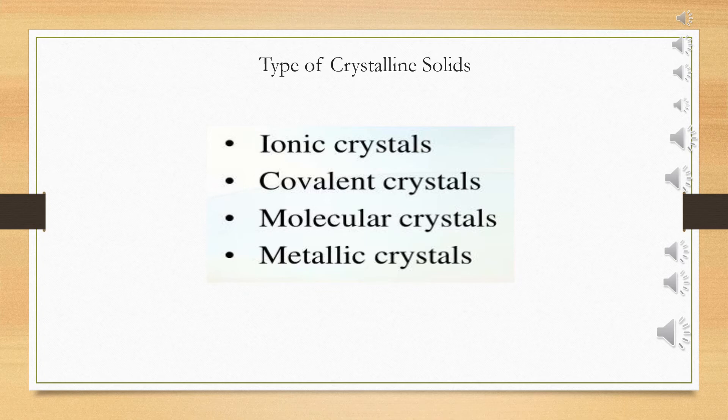We will mainly discuss crystalline solids. Crystalline solids are classified into four categories depending upon the nature of the force and the type of particles present in the solid: molecular solids, ionic solids, metallic solids, and covalent solids.